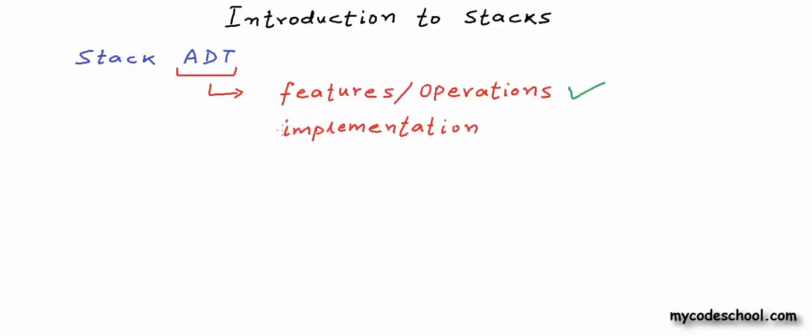We are going to talk about stack as abstract data type or ADT. When we talk about a data structure as abstract data type, we talk only about the features or operations available with the data structure. We do not go into implementation details. Basically, we define the data structure only as a mathematical or logical model. We will go into implementation of stack in later lessons. In this lesson we are going to talk only about stack ADT, so we are only going to have a look at the logical view of stack.